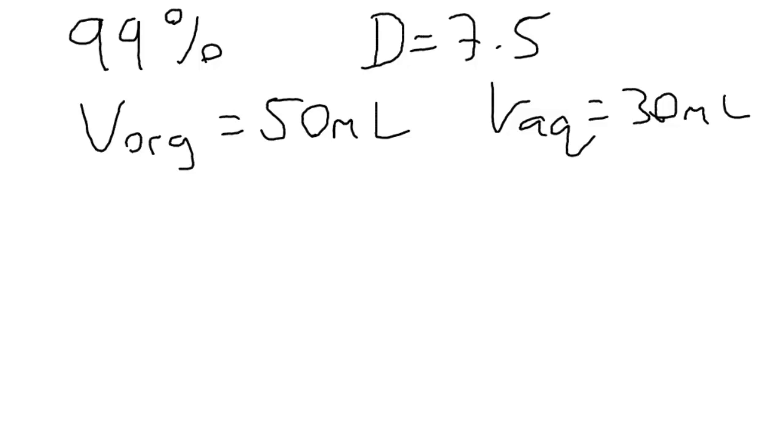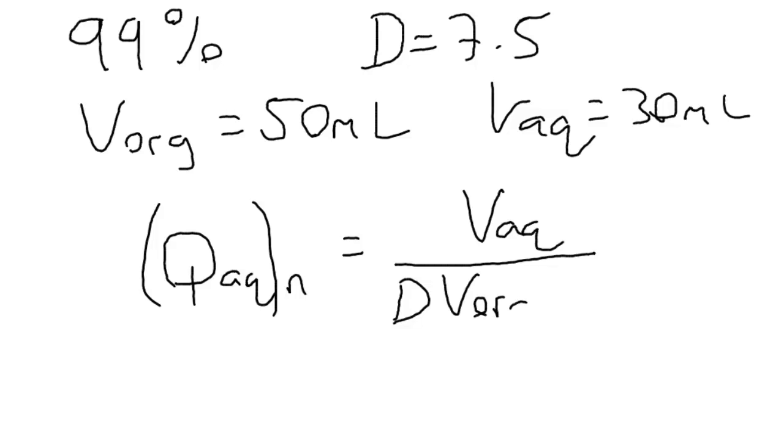And if we know that, we can plug everything into an equation. The equation we're going to use is that the fraction of analyte in the aqueous phase after a certain number of extractions equals the volume of the aqueous phase divided by the distribution ratio times the volume of the organic phase plus the volume of the aqueous phase, raised to the power n, where n is the number of extractions.